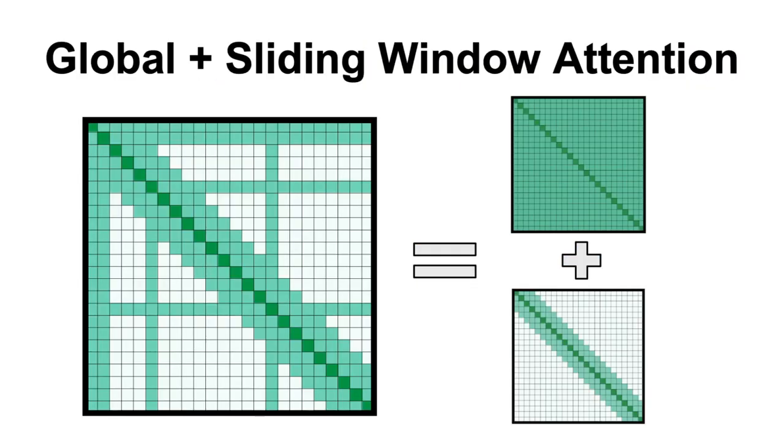Finally, the longformer paper also introduces the global plus sliding window attention, which is a hybrid approach that combines the strengths of both the sliding window and the full attention mechanism.